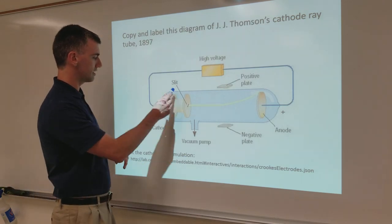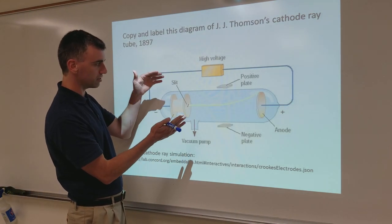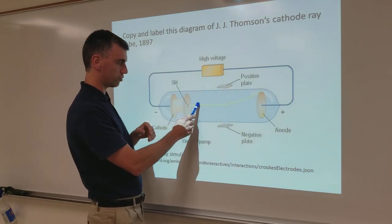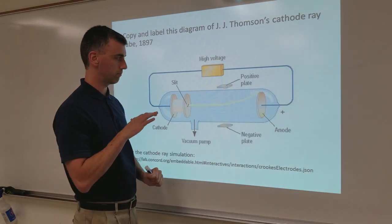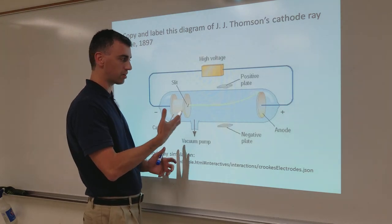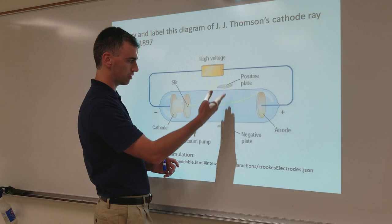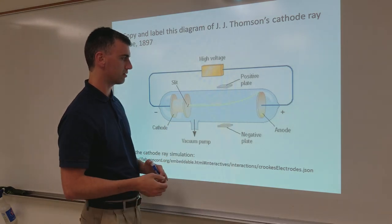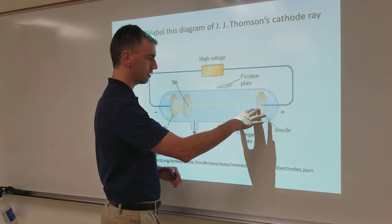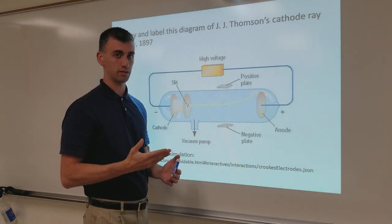So what it is, is this cathode ray tube is so-called because it has this cathode and it's got this ray coming out of it. What that ray is, is particles that were deflected by charged plates when those plates were placed on the outside. It came out of here and went toward here. If an object was placed here, it would block the particles.